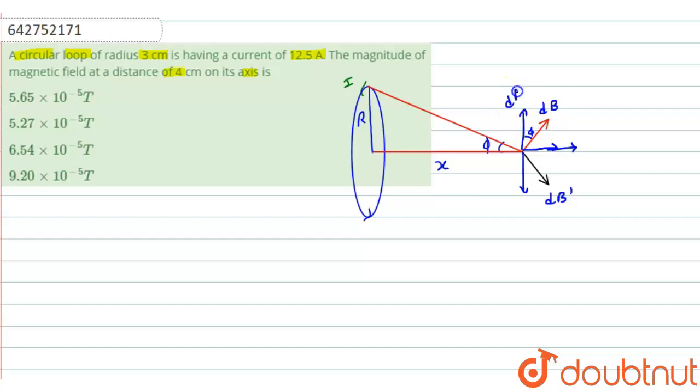this direction, it will be dB cos phi and it will be dB dash cos phi. And in this direction, it will be dB sin phi and dB dash sin phi.